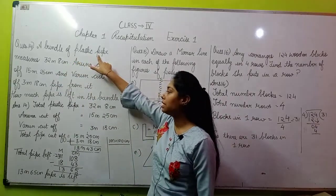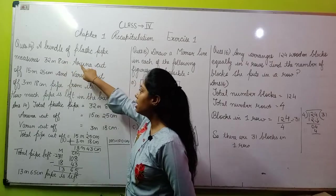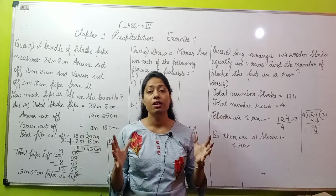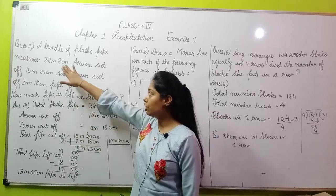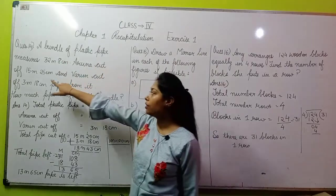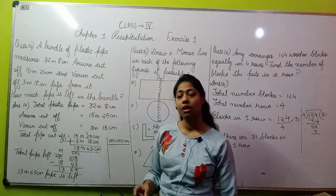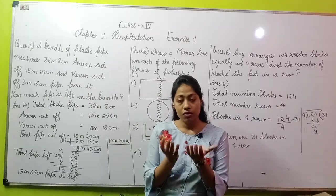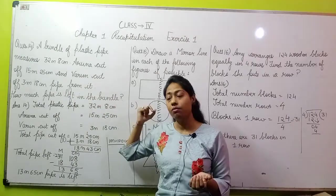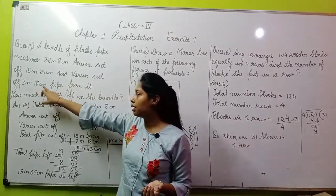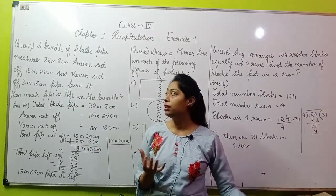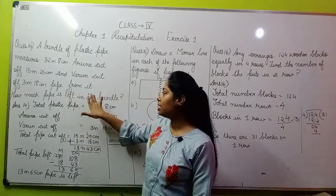A bundle of plastic pipe measures 32 meters 8 centimeters. A plastic pipe has a bundle of length 32 meters 8 centimeters. Aruna cut off 15 meters 25 centimeters. This girl is Aruna, she has cut from the pipe 15 meters 25 centimeters. And Varun cut off 3 meters 18 centimeters from it. Varun has cut from the pipe.